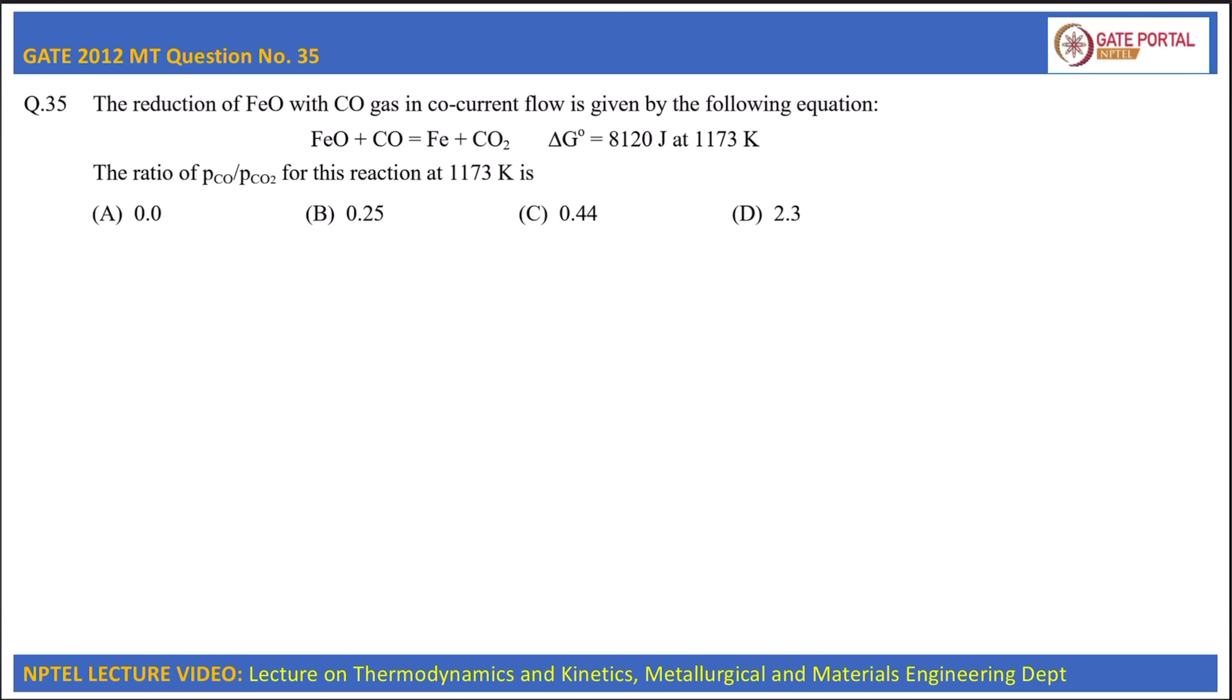The reaction given is FeO + CO = Fe + CO2 and the ΔG° for this reaction is also given to us. Now, as we know for any reaction that ΔG = ΔG° + RTln Q, where Q is the reaction quotient.